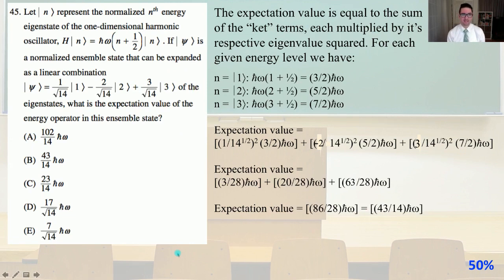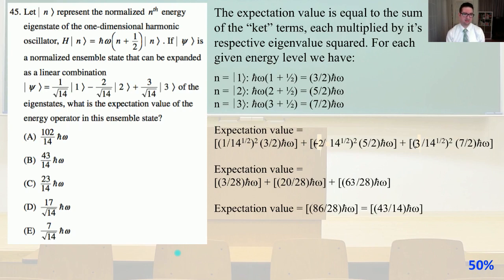Number 45. Let |n⟩ represent the normalized energy eigenstate of the one-dimensional harmonic oscillator: H|n⟩ = ℏω(n + 1/2)|n⟩. If psi is a normalized state that can be expanded as |psi⟩ = (1/sqrt(14))|1⟩ - (2/sqrt(14))|2⟩ + (3/sqrt(14))|3⟩, what is the expectation value of the energy operator in the ensemble state?